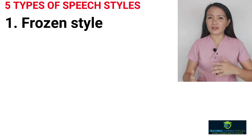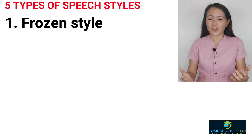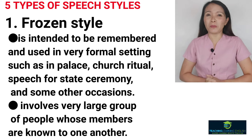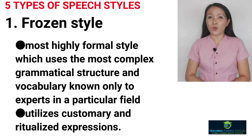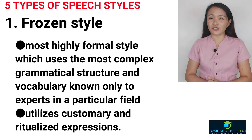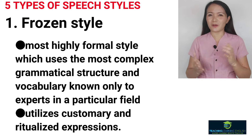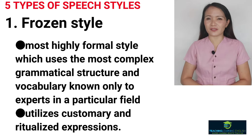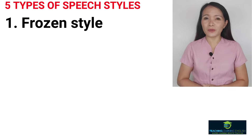The first is frozen style. Frozen style is a style which is intended to be remembered and used in very formal settings such as in a palace, church ritual, or state ceremony. This style involves a very large group of people whose members are known to one another. It is considered the most highly formal style, which uses the most complex grammatical structure and vocabulary known only to experts in a particular field. It utilizes customary and ritualized expressions. Going back to the dialogues and pictures, which is the best example for frozen style?